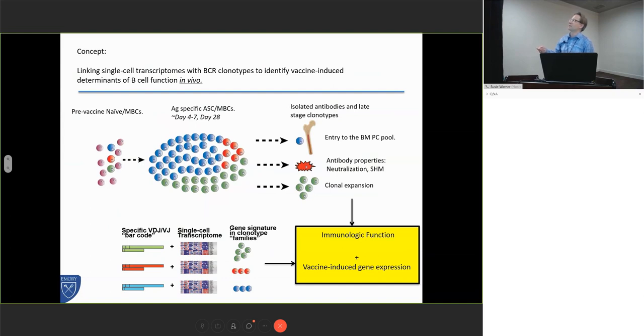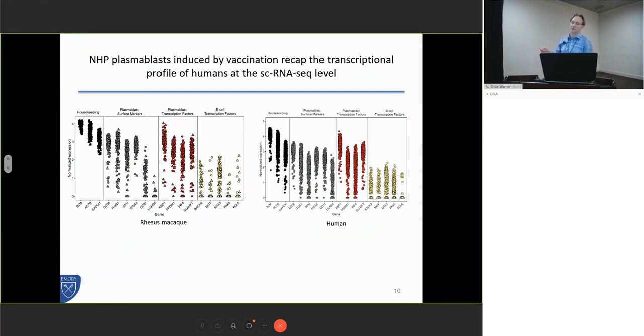For example, if you had a clonotype that was expanded really early on after a vaccine in the plasmablast pool, some of your clonotypes are going to end up entering into the long-lived antibody secreting population in the bone marrow. Some might have desirable qualities for developing broadly neutralizing antibodies such as high levels of somatic hypermutation. Some might expand really efficiently.